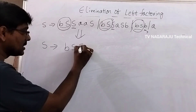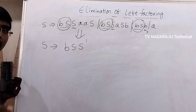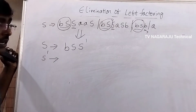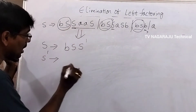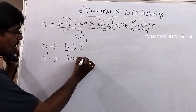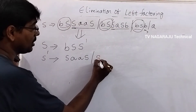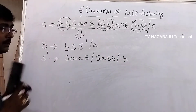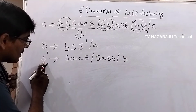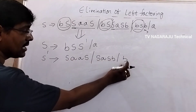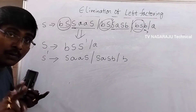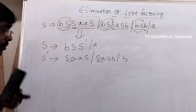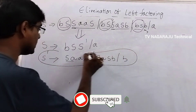To eliminate left factoring: S tends to bS followed by a new non-terminal S-dash. Create S-dash, and S-dash tends to the remaining parts of all productions: S-aS | b | a-aS. Now check S-dash: aAS and aaS — here 'a' is common in two of them, and this requires further attention.